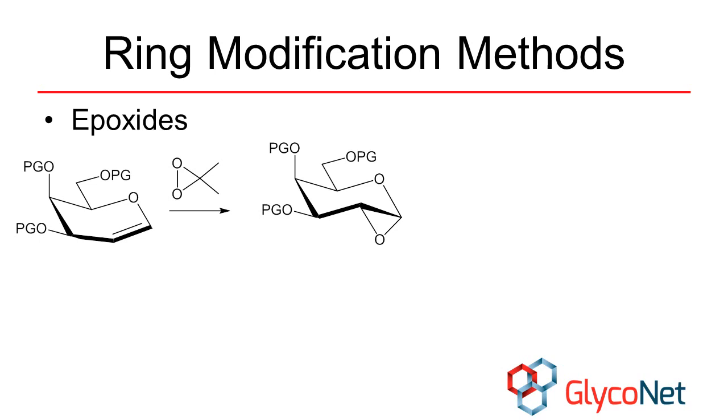Glycals can be converted into epoxides using dimethyldioxirane. Epoxides can also be made through the base-catalyzed displacement of good leaving groups by adjacent trans-oriented alcohols.